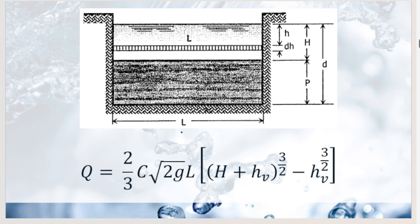Now let's move to contracted rectangular weirs. Unlike suppressed or standard weirs, these have contractions. For one-end contraction (N = 1) or two-end contraction (N = 2), the effective length is: L = L' − 0.1·N·H, where L' is the measured crest length, N is the number of contractions, and H is the measured head.